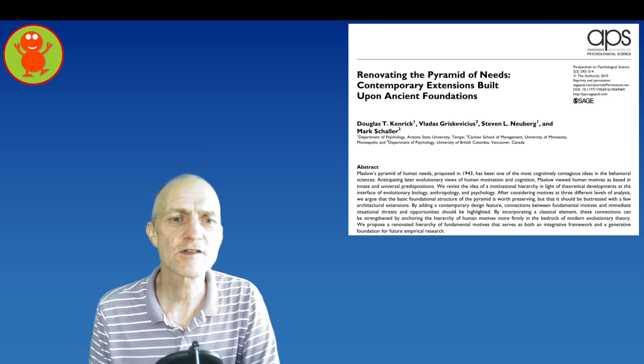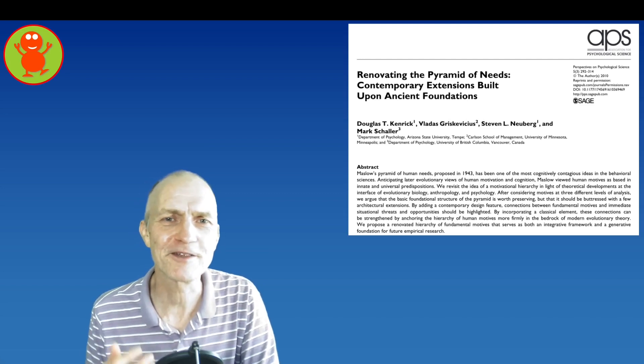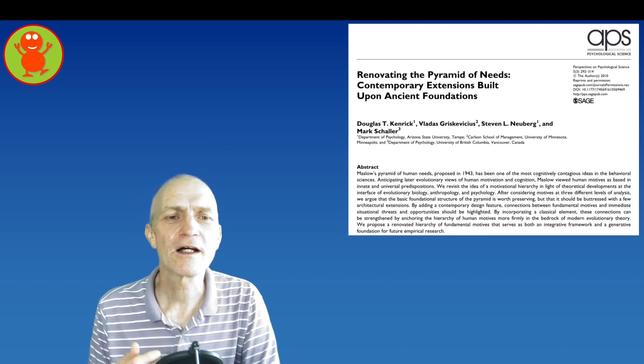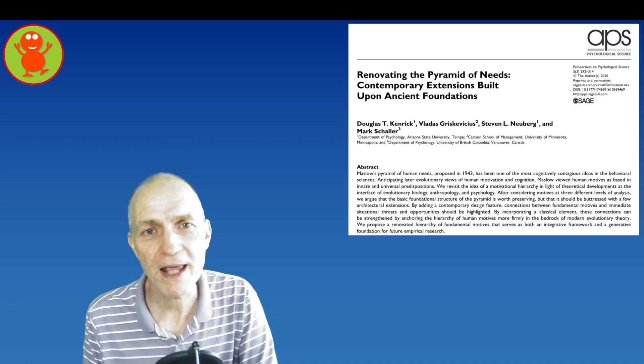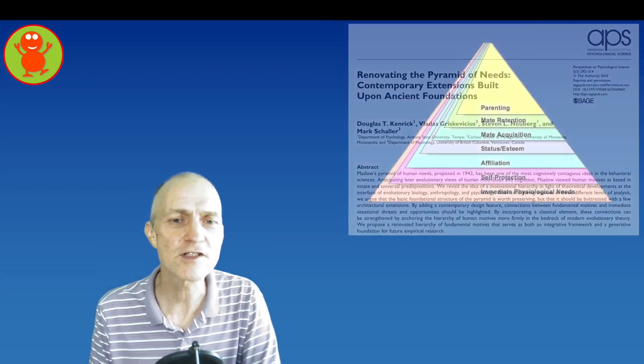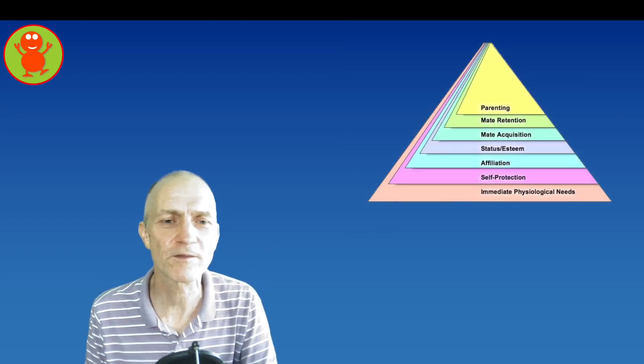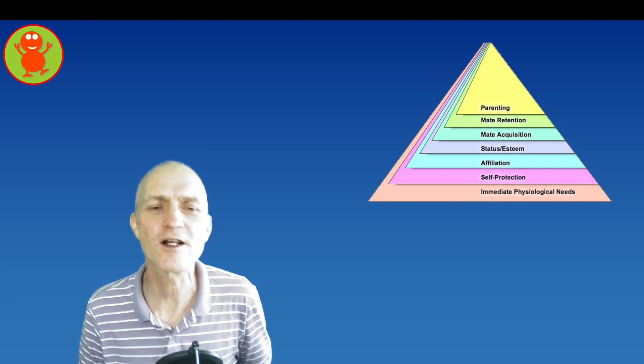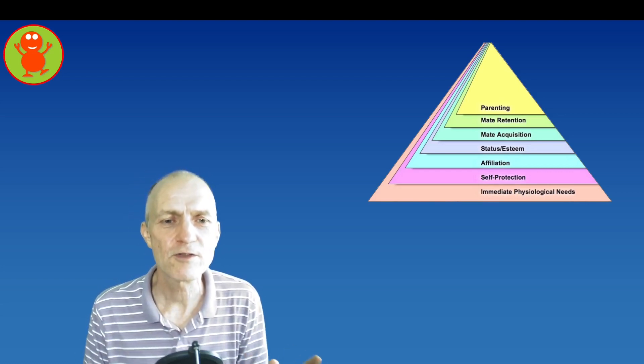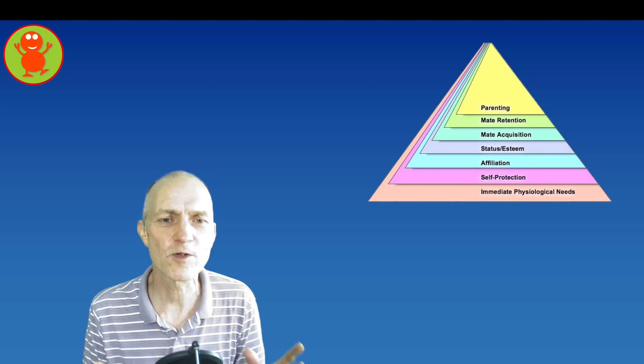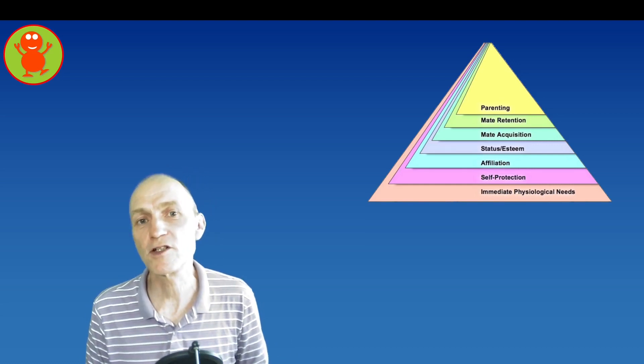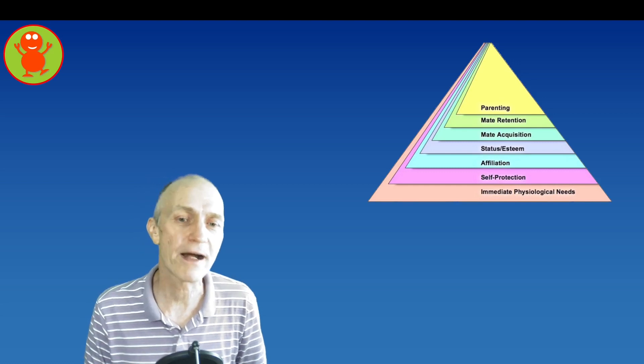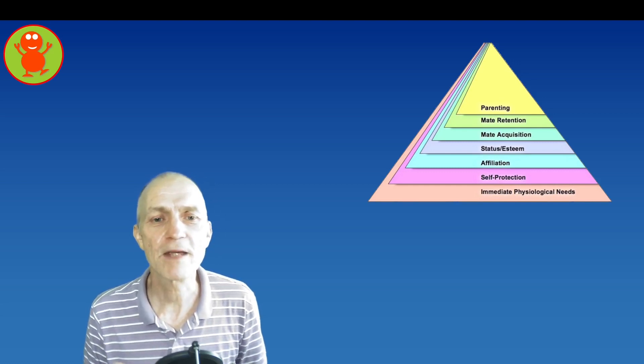Called Renovating the Pyramid of Needs - nice title. That takes an evolutionary psychological perspective on the work and changed the pyramid actually a little bit. They say from an evolutionary psychological perspective, if we take the idea of Maslow but we would like to arrange it like this, they took the self-actualization out but instead put in parenting, mate retention, and mate acquisition.